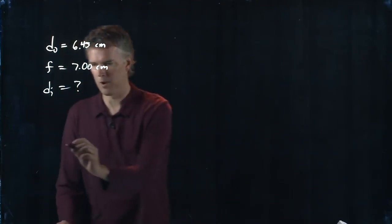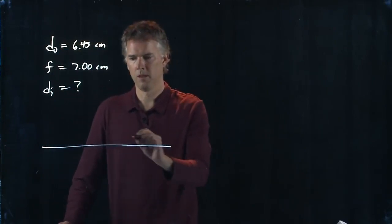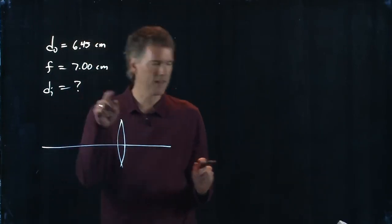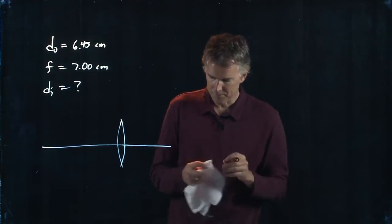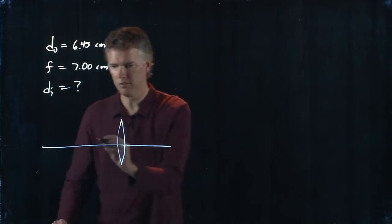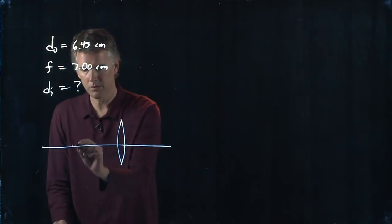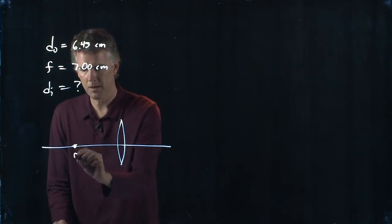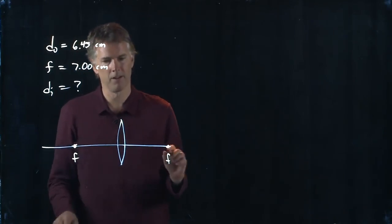Okay, let's draw a picture of this thing. Here's our lens. They told us that it is a 7 centimeter lens and that is a positive number, so it's a converging lens. So let's put the focus right there, F, on either side.